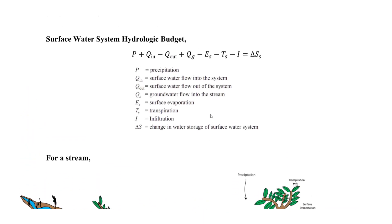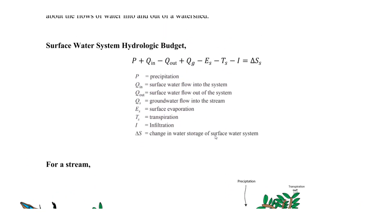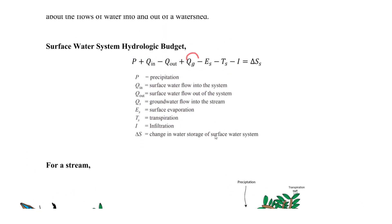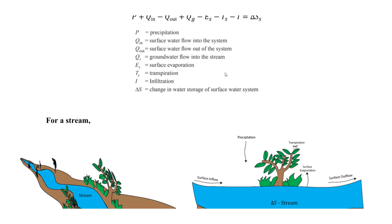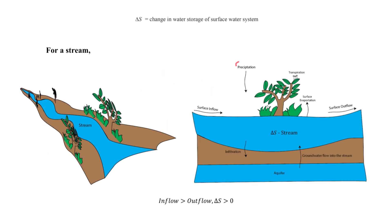The inflows are positive: P (precipitation — snow or rainfall), Q_in (surface water flow into the system, essentially runoff in), and Q_g (groundwater flow into the system). Looking at the diagram above, precipitation goes into the stream, surface water inflow goes in, and groundwater flow goes in — all positive.